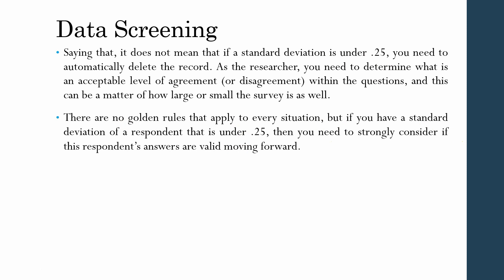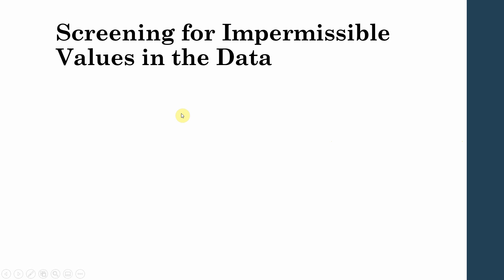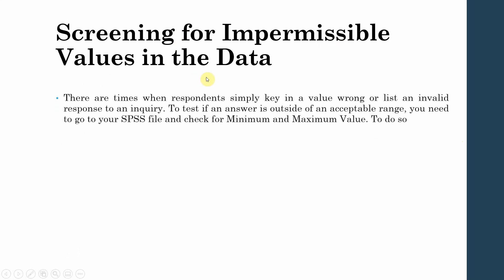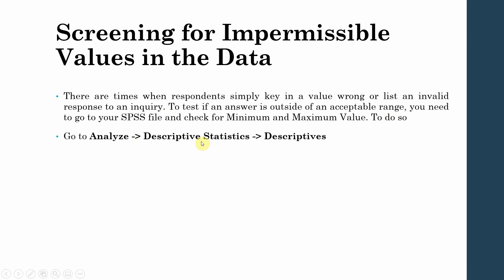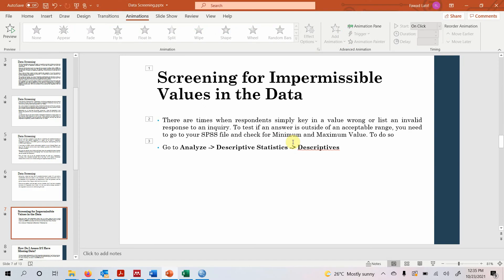Now, screening for impermissible values in the data: there are times when a respondent simply keys in a wrong value or lists an invalid response. To test if an answer is outside an acceptable range, you need to go to your SPSS file and check for minimum and maximum values. To do so, go to Analyze > Descriptive Statistics > Descriptors.